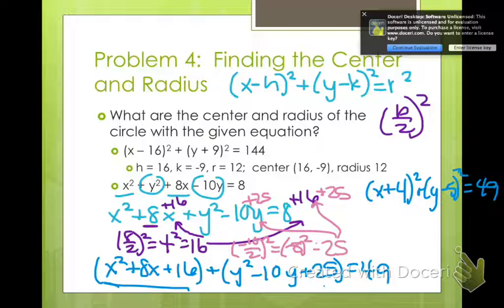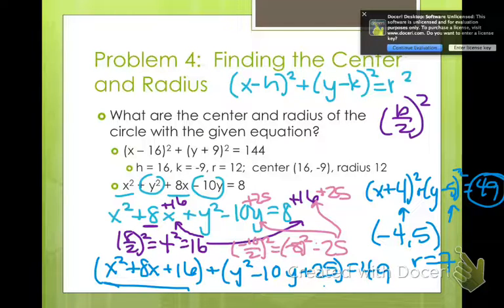Now, to find our center and our radius, we just look at the equation. Our center is at the point (-4, 5), and our radius is 7. So there you go, completing the square.